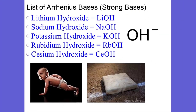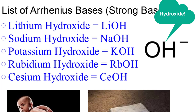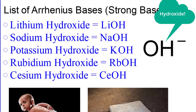The other list is our Arrhenius bases — strong bases. These are mainly the Group 1 hydroxides, meaning they have an alkali metal ion with hydroxide: lithium hydroxide, sodium hydroxide, potassium hydroxide, rubidium hydroxide, and cesium hydroxide. These are all strong bases, which means all you have to write is OH-, or hydroxide.